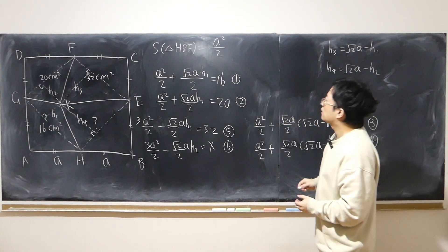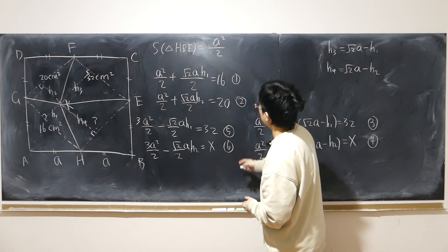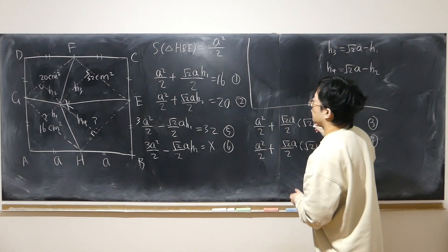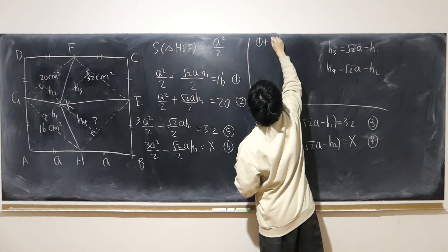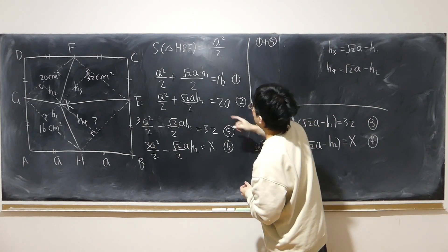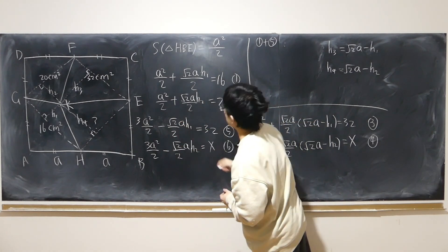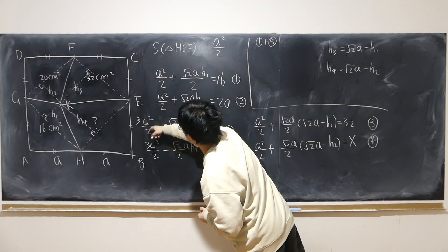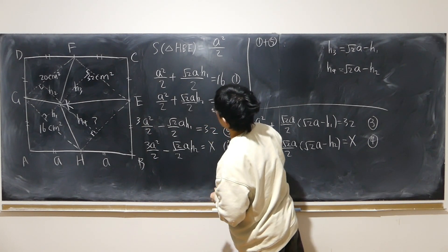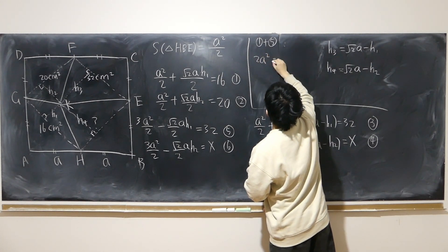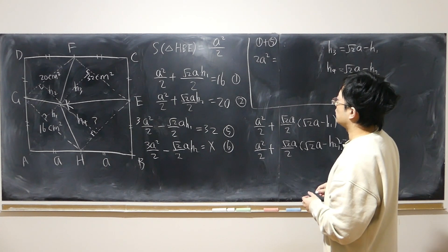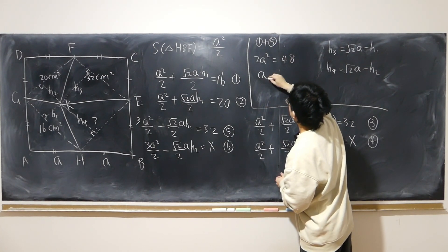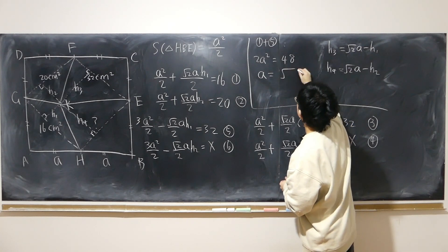Now I want to use equation 1 and equation 5. Adding them: the positive and negative H1 terms cancel exactly, giving 4A²/2, that is 2A², equals 16 plus 32, which is 48. So immediately A squared equals 24, meaning A equals √24.